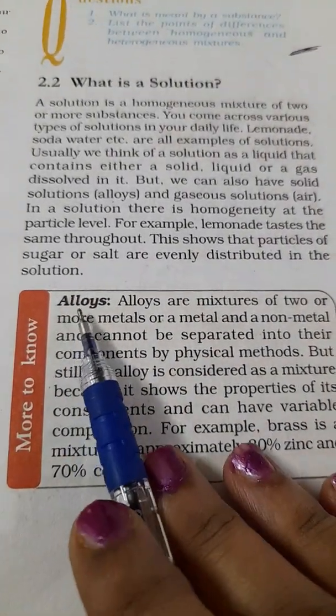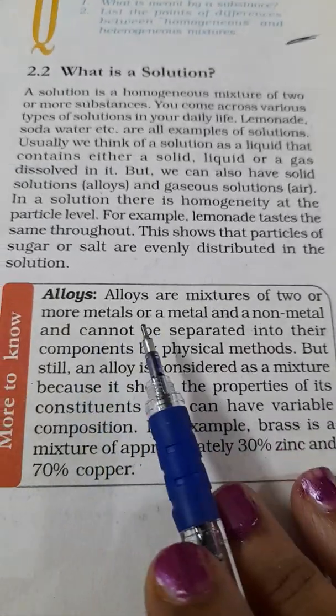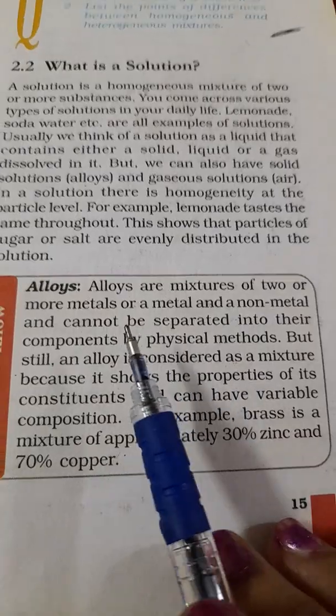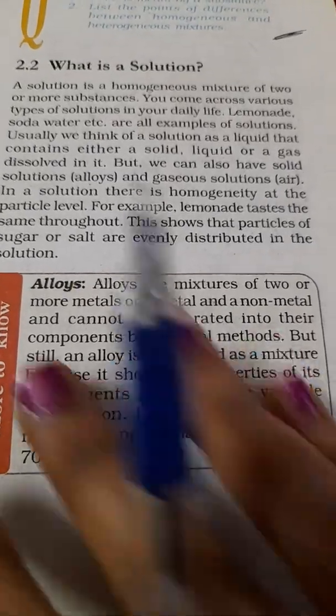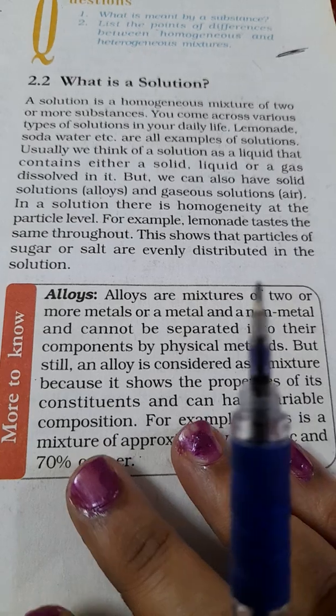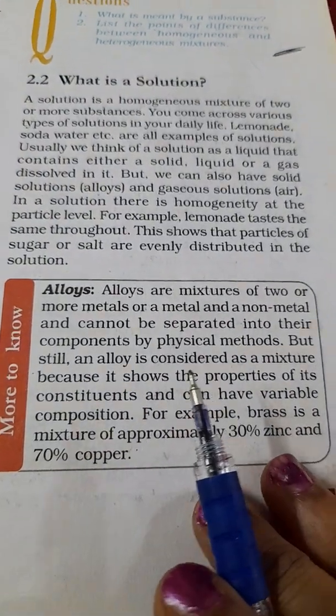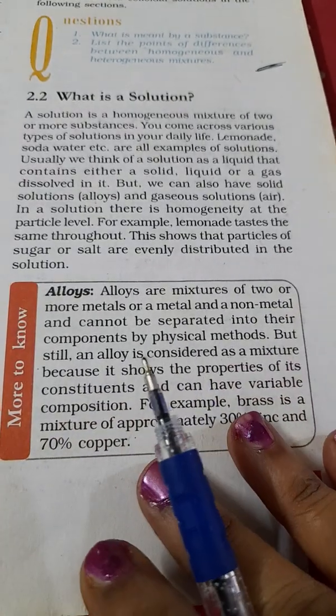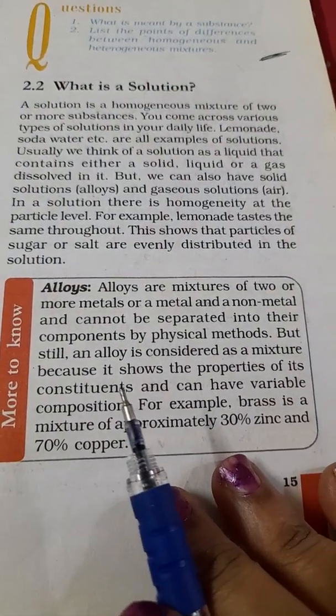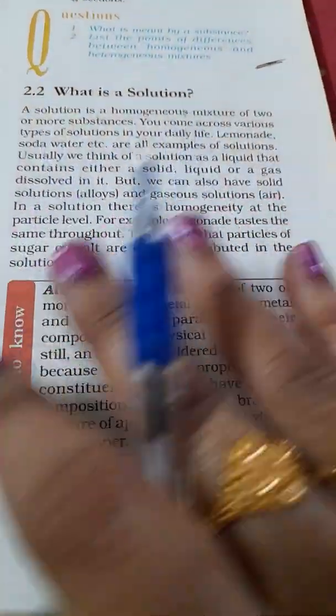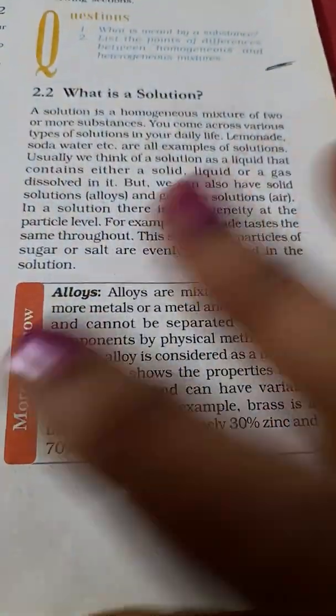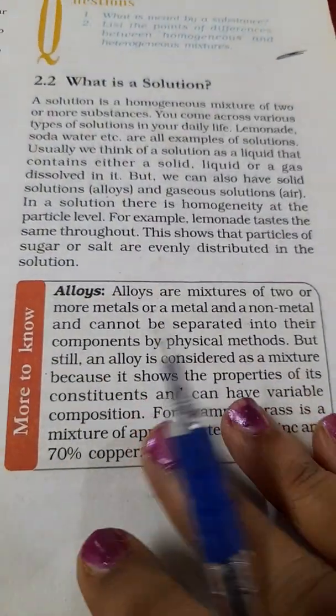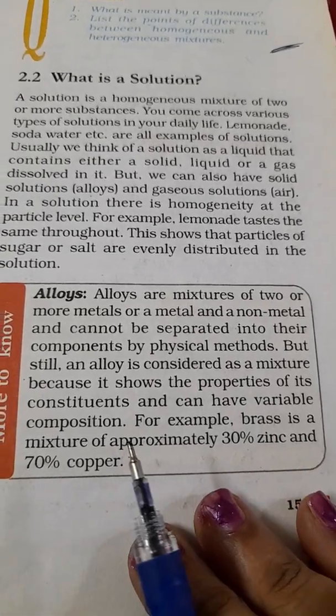Now we will see what are alloys. Alloys are mixtures of two or more metals or a metal and a non-metal and they cannot be separated into components by physical methods. But we say that alloy is a mixture because the properties of those constituents can be found in the alloys and can have variable composition.